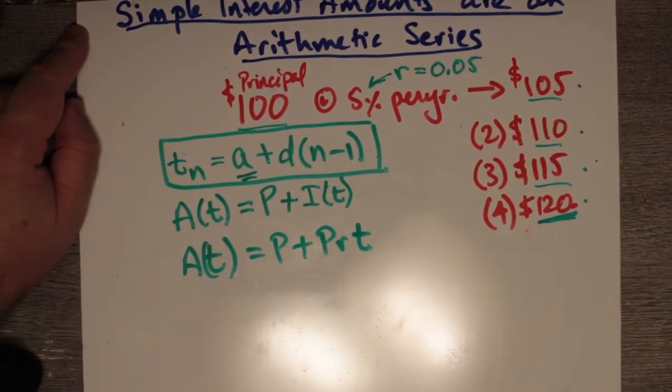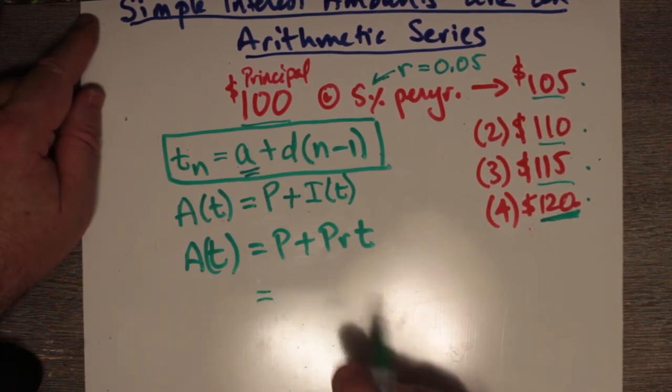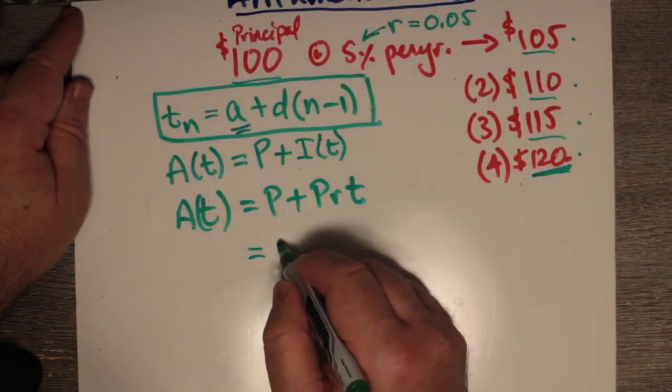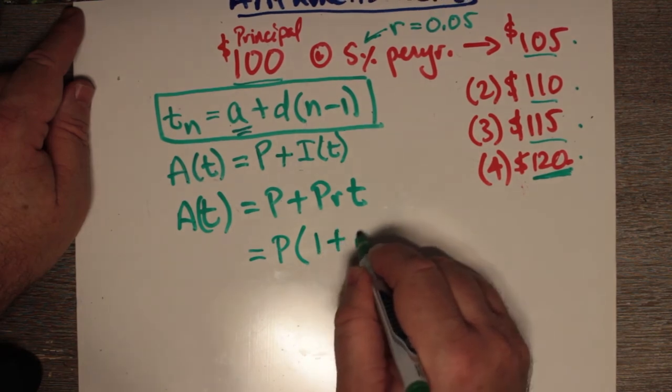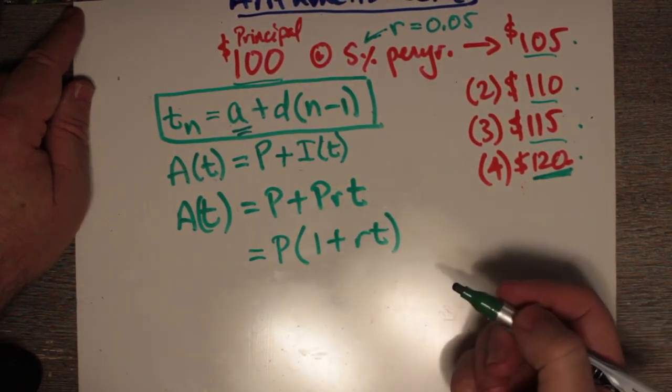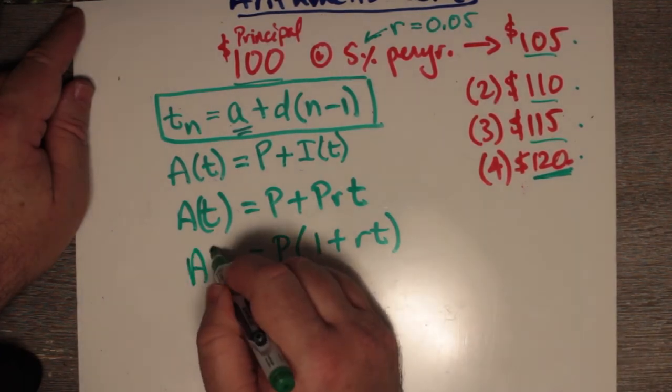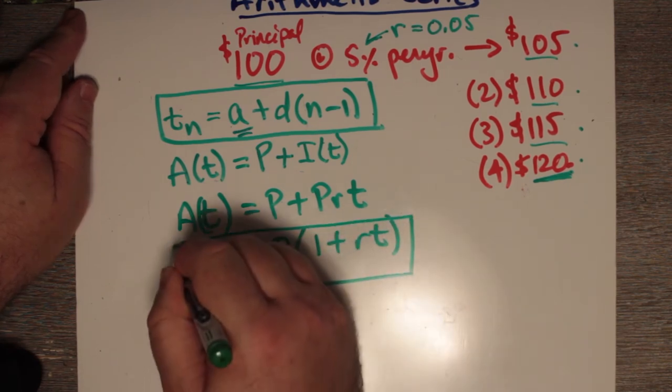We can go like that. Now, the only thing is, that kind of makes P common. So we can also simplify this by saying P outside of 1 plus RT. So P times 1 plus RT can give us our A of T.